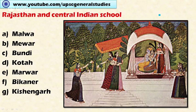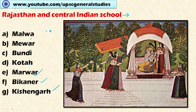The third is the Rajasthan and Central Indian school of painting. Here prominence is given to the life history of Lord Krishna and various stories from the Ramayana and Mahabharata — a religious theme. Different branches of this school include Malwa, Mewar, Bundi, Kota, Marwar, Bikaner, and Kishangarh.